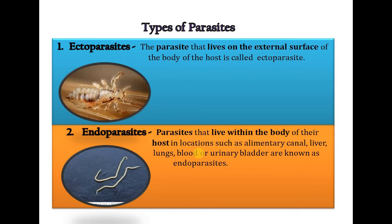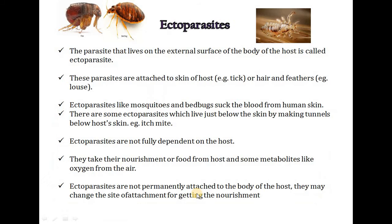We will now study types of parasites. The first type is the ectoparasite: a parasite that lives on the external surface of the body of the host. An example is lice. The second type is the endoparasite: parasites that live within the body of their host in locations such as the alimentary canal, liver, lung, blood, or urinary bladder.